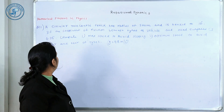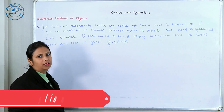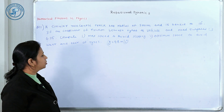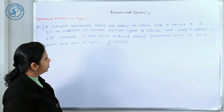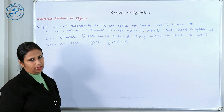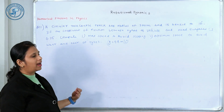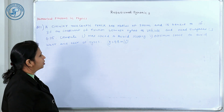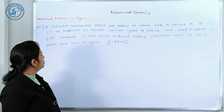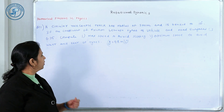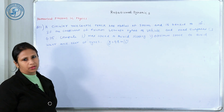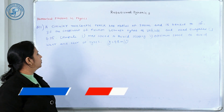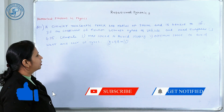Now let's start question number 11. We have 10 important questions. A circular race course track has a radius of 500 meters and it is banked at 10 degrees. It is a circular track inclined at an angle of banking of 10 degrees. The coefficient of friction between the tires and the road surface is 0.25. We have to find the maximum speed to avoid slipping and the optimum speed to avoid wear and tear of the tires — so two types of speed.